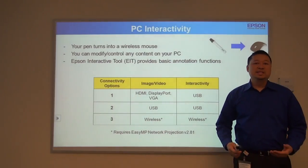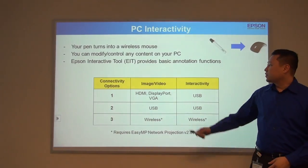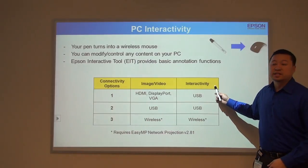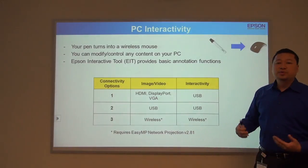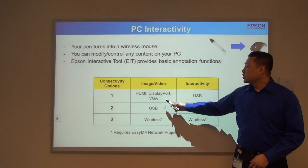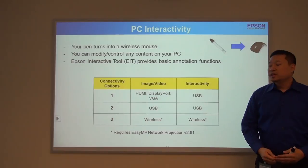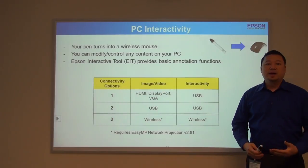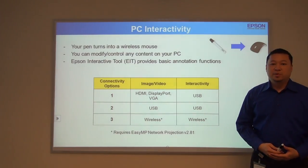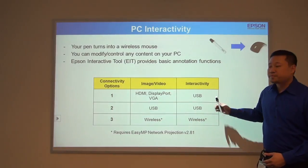For PC interactivity, you're going to need to transfer your video or image signal and your interactivity signal. There are three ways of doing it. One, you can transfer the video or image using an HDMI display port or VGA cable, and combine that with USB for the interactivity.